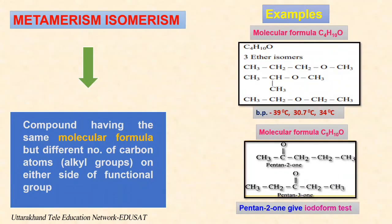Metamerism is defined as two or more compounds with the same molecular formula and same functional group, but different groups on either side of the polyvalent functional group like ketones, ether, ester, etc. Three isomers are possible with the molecular formula C4H10O having ether as a functional group. These isomers have both London dispersion forces and dipole-dipole interactions. Because of the polar oxygen bond, they have higher boiling points than nonpolar molecules like alkanes. There is a slight difference in the boiling points of these three isomers.